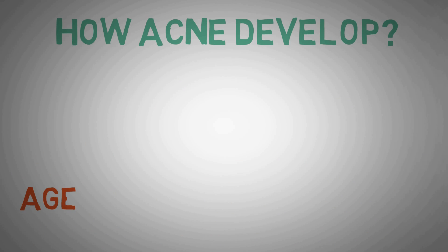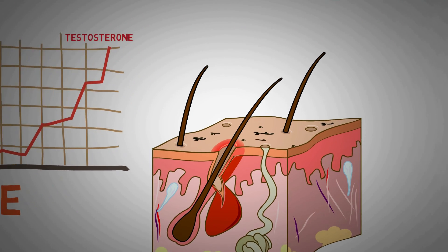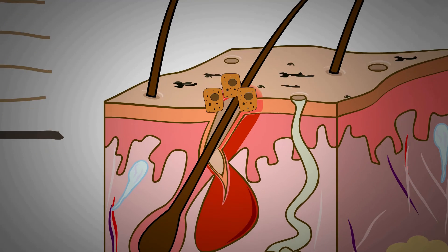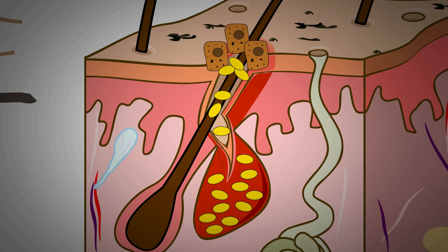Age is a very important factor for the development of acne. As soon as you hit puberty, your testosterone levels rise significantly. Testosterone is one of the main hormones that controls the amount of sebum produced by the sebaceous glands, and the amount of sebum produced increases when you hit puberty.